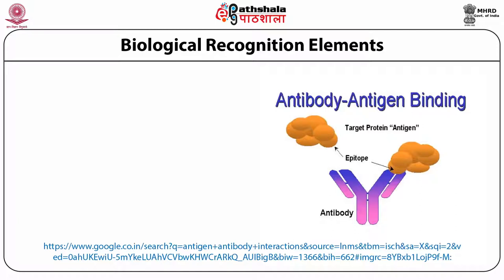Let us see how optical biosensors have been developed for detection of food toxic elements. By far, the most specific interactions are the antigen and the antibody interactions. An antigen is generated only against a specific antibody. Therefore when looking at limitations offered by conventional techniques — crosstalk and low sensitivity — antigen-antibody binding is the best sort of interaction to develop specific biosensors. Antibodies as working elements form the most highly specific biological recognition elements.